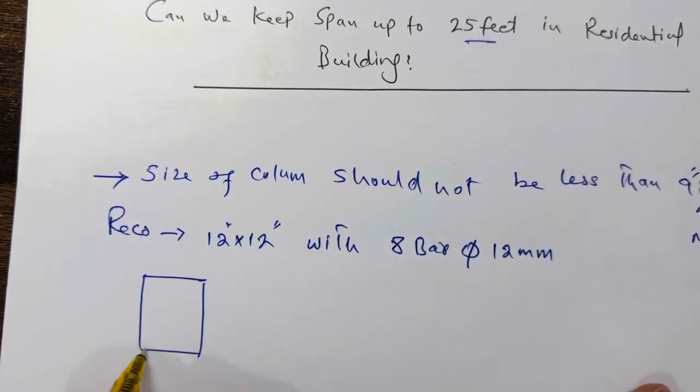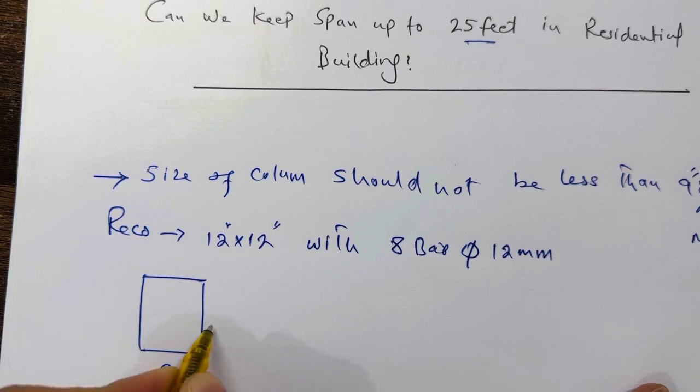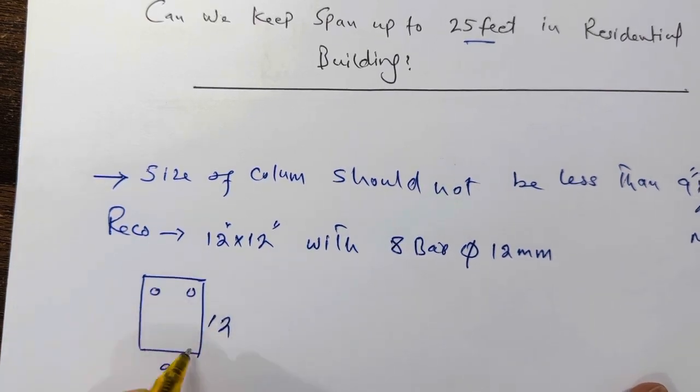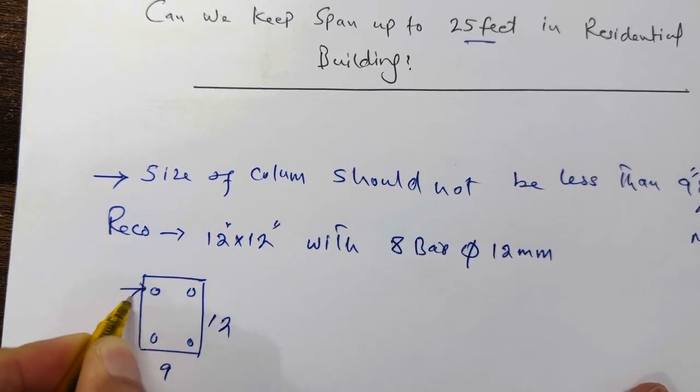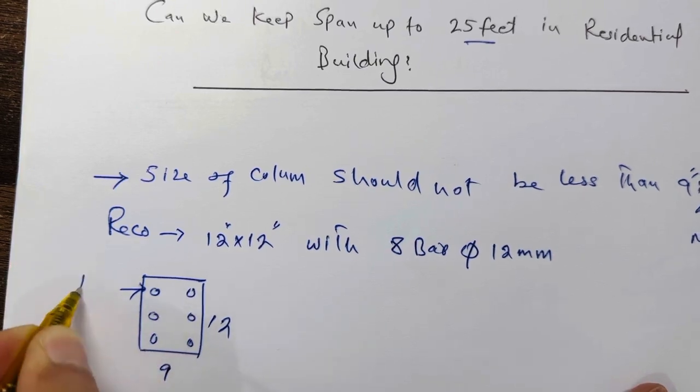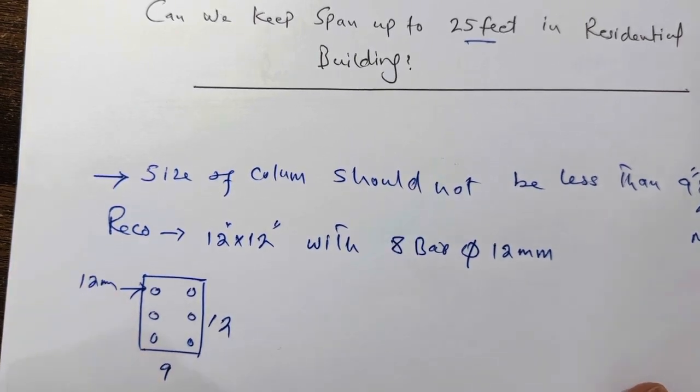So this is minimum size which is 9 inches by 12 inches inside six numbers of steel rods, and the diameter should not be less than 12 millimeter.